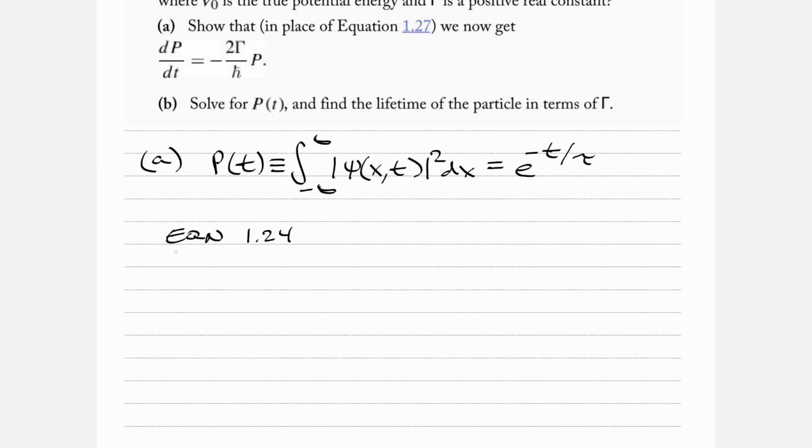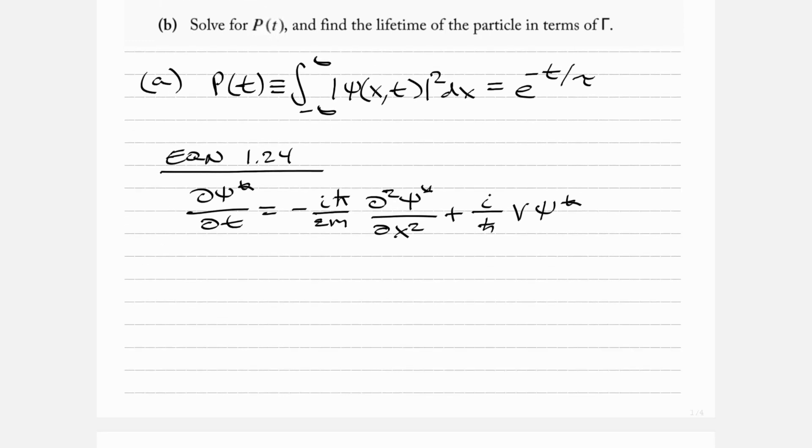Equation 1.24 is dψ*/dt equals minus iℏ bar over 2m times d²ψ*/dx² plus i over ℏ bar V times ψ*. Now we want to say this V is now defined as V₀ minus iΓ and that is no longer real.